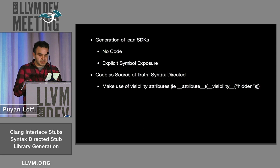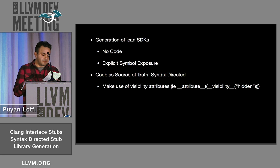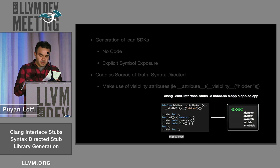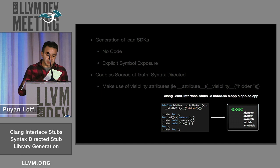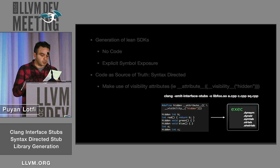Our motivation in building Clang Interface Stubs was to address the problem of building SDKs that expose explicitly anointed APIs by generating one of these stub files. We wanted source code to be the source of truth, and we wanted to give developers fine-grained control over API exposure as well as their internal SPIs. For these reasons, we repurposed the visibility attribute to enable developers to produce stub files containing only symbols marked for export.